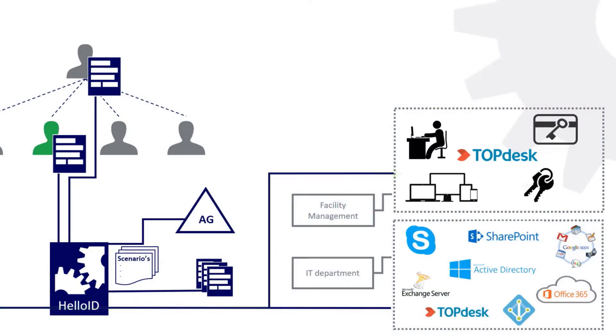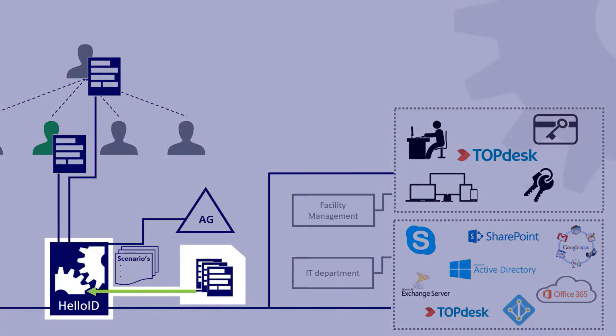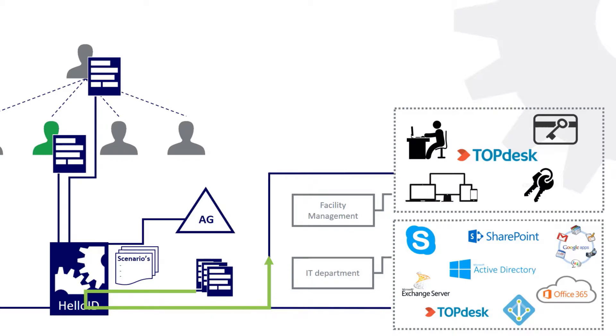Another route is when you don't want to trigger an event from the HR system. Instead, you want to do a manual entry and fill out a form in HelloID. This is an alternate input flow.